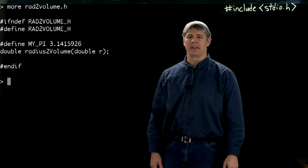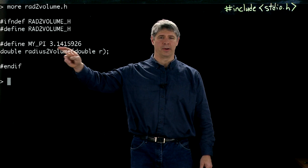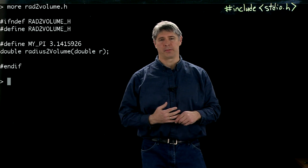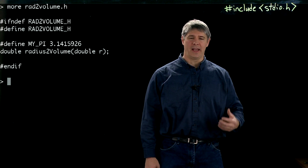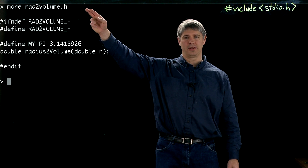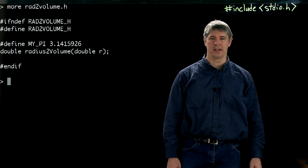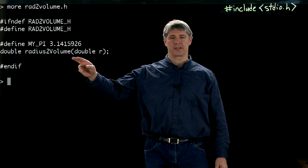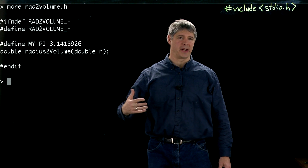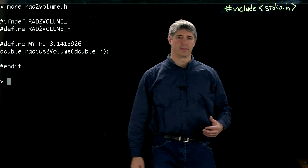Here's a header file that does two things. It defines pi — we call it MY_PI — as the constant 3.14, making it available to any C file that includes rad_to_volume.h, just like including stdio.h. It also provides a function prototype called radius_to_volume, which takes in a double (the radius of the sphere) and returns another double (the volume of the sphere).